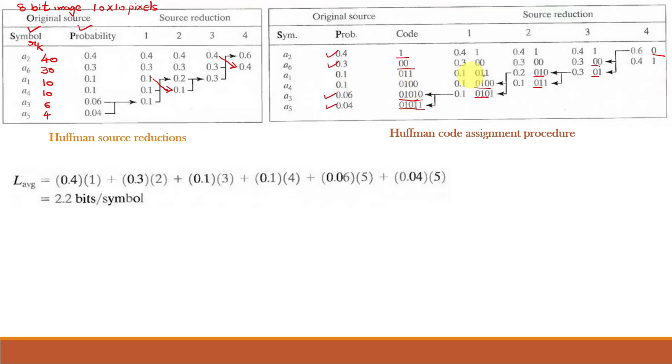Now, for 0.1 it goes here and from here it goes here. So, here it is 0,1,1. So, we will write here 0,1,1. For next 0.1 it goes here and here we have denoted 0.1 as 0,1,0,0. So, we will write here 0,1,0,0. In this way we obtain codes for a2 as 1, a6 as 0,0, a1 as 0,1,1, a4 as 0,1,0,0, a3 as 0,1,0,1,0 and a5 as 0,1,0,1,1. So, this is Huffman encoding.